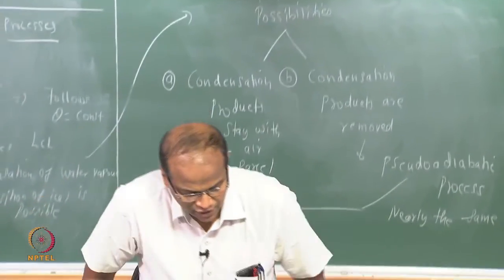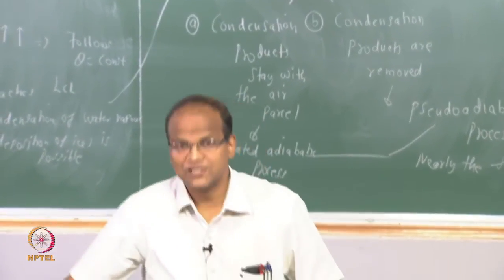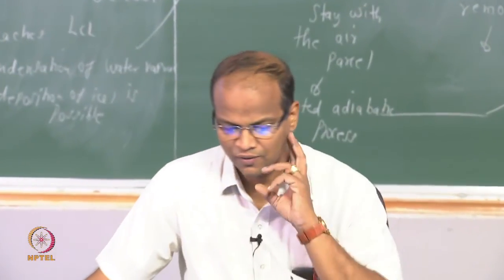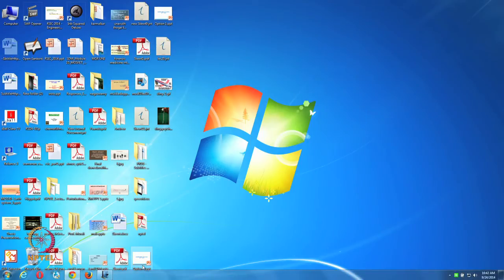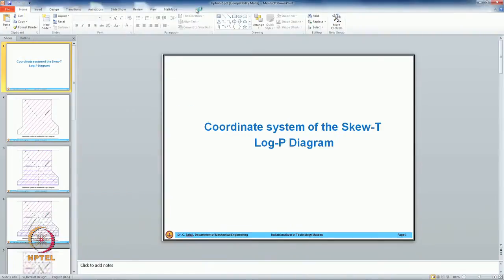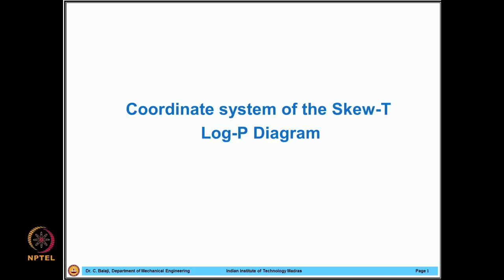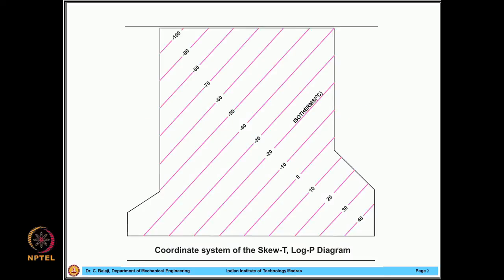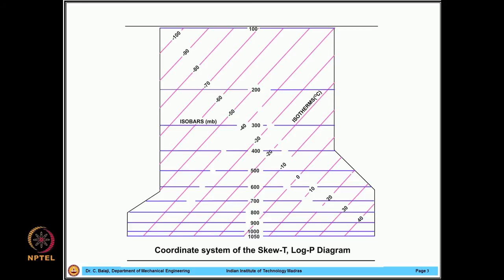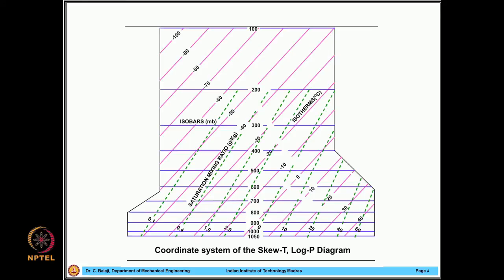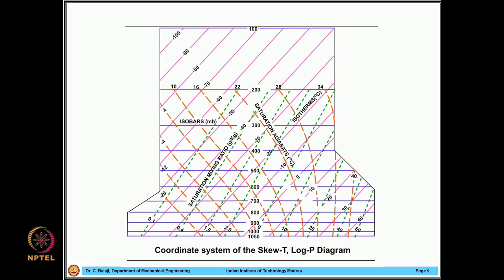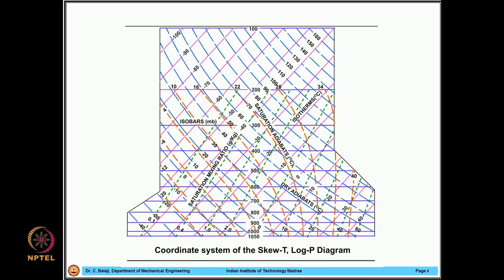Let us see those lines and calculate the wet bulb temperature for Chennai's condition. The coordinate system of the QT-lnP diagram — we revisit this. The pink lines are the isotherms, you have the isobars, saturation mixing ratio omega-s, and the saturation adiabat. This is the set of curves we have never used thus far. Dry adiabat — that is all the lines on the chart.